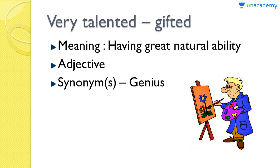Moving on, 'very talented' — the word for very talented is 'gifted.' We call someone talented when they have some talent, some specialization in something. For example, if I'm good at drawing, you may say she's very talented, she has a natural ability to draw. Similarly, if someone sings well, you'd say they're a very talented singer; a talented writer expresses themselves very well. You use 'talented' when someone is exceedingly creative in some field. The meaning of 'gifted' is to have a great natural ability.